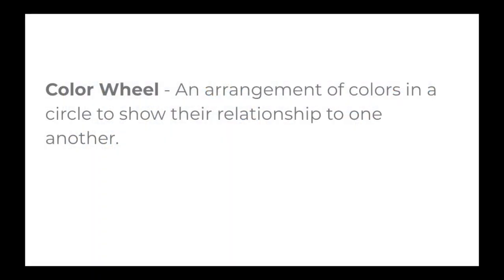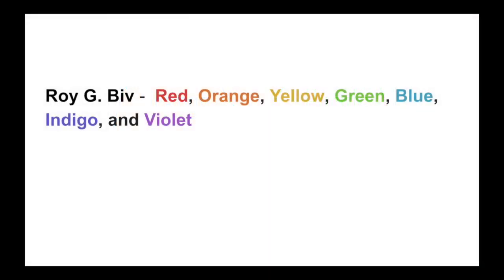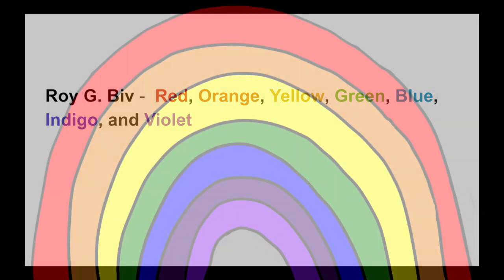Finally, we're going to make a color wheel. It's the arrangement of colors and their relationship to one another. I want you to remember about our friend, Roy G. Biv. That's the order that we're going to be laying our colors out in. Roy G. Biv is the rainbow.